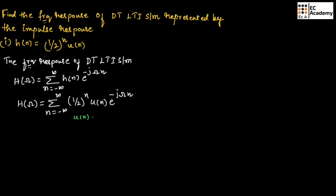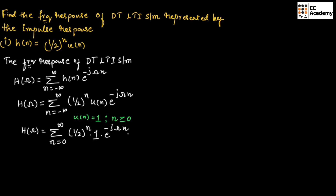Now, u(n) equals 1 for n greater than or equal to 0. Therefore, we can rewrite the equation as H(ω) equals the summation from n equals 0 to infinity of (1/2)^n times 1 times e^(-jωn), which simplifies to the summation from n equals 0 to infinity of (1/2 · e^(-jω))^n.